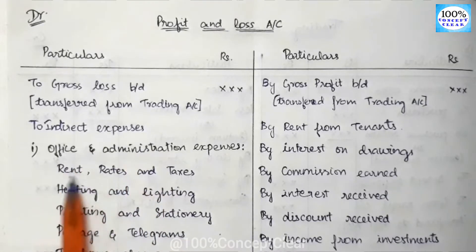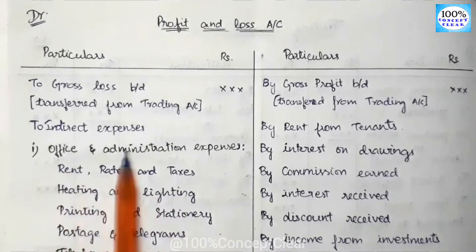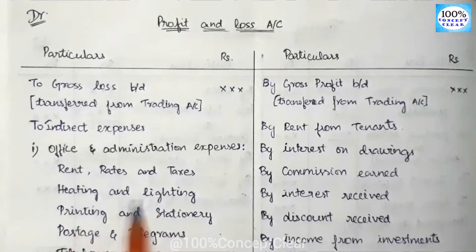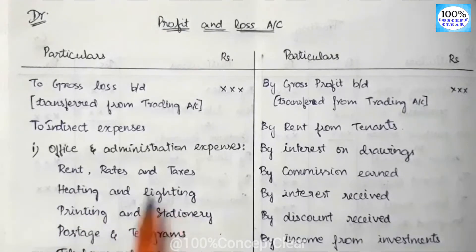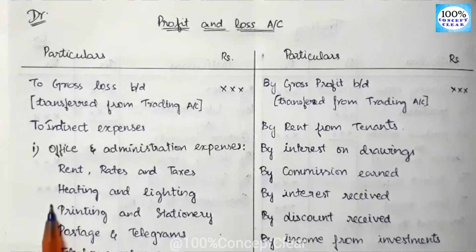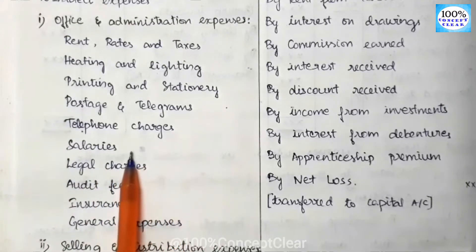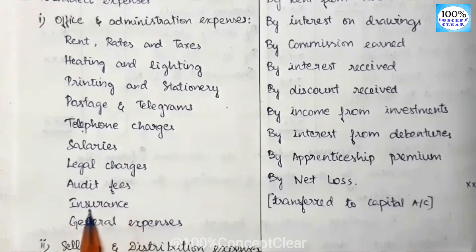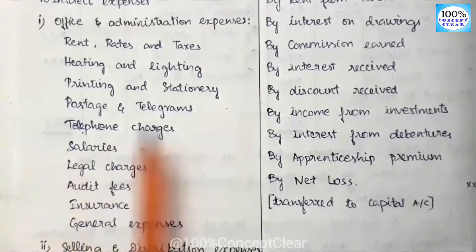Office and administration indirect expenses include: rent, rates and taxes — when we pay for our office; heating and lighting expenses; printing and stationery; postage and telegram; telephone charges; salaries — when we pay our employees' salary; legal charges; audit fees; insurance; and general expenses. These are the office and administration expenses.